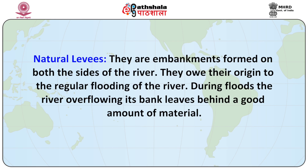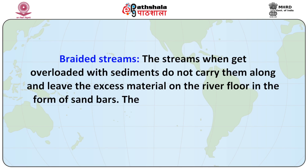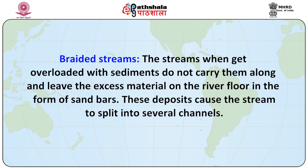Natural levees: they are embankments formed on both sides of the river. They owe their origin to the regular flooding of the river. During floods, the river overflowing its banks leaves behind a good amount of material. This material, due to regular occurrence, consolidates into small embankments known as natural levees. These levees sometimes rise very high as they grow with each successive flood. Another feature is braided streams: streams that get overloaded with sediments leave the excess material on the river floor in the form of sand bars. These deposits cause the stream to split into several channels. Braided streams are a common occurrence in regions which are relatively dry and arid and where the supply of water is not steady.